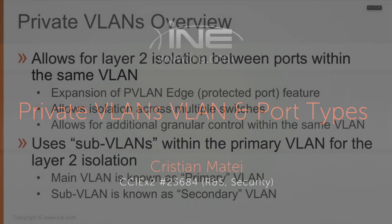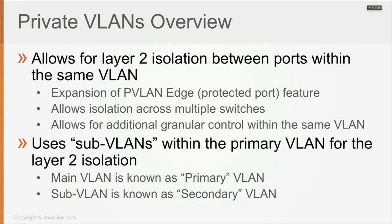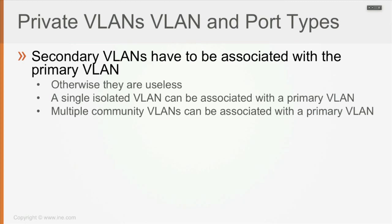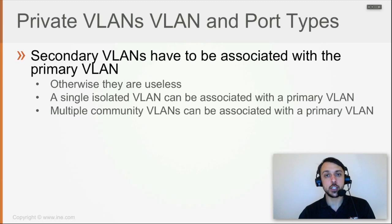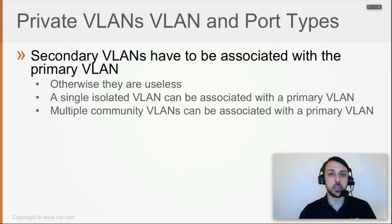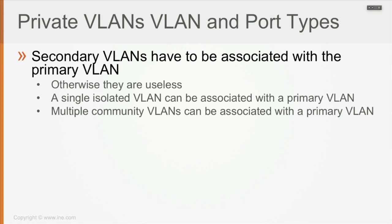When you define the configuration, you have to define what your primary VLANs are and what are going to be your secondary VLANs. Once you have defined both, the secondary VLANs have to be associated with the primary VLAN. Because you can have multiple such associations on the switch, it's not enough to just define which VLANs are secondary and which are primary — you also have to associate them. There can be only one primary VLAN, but each primary VLAN can have multiple secondary VLANs associated with it.